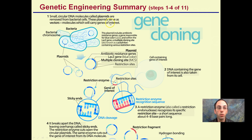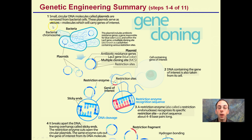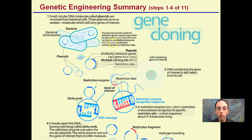Starting with gene cloning, here are the highlights. Step one: small circular DNA molecules called plasmids — you may remember those from our previous videos — are removed from bacteria cells. These plasmids serve as vectors, which are molecules that carry genes of interest. That gene of interest could be something we want to multiply or develop — a lac gene would be an example. Antibiotic resistance genes could also be added.